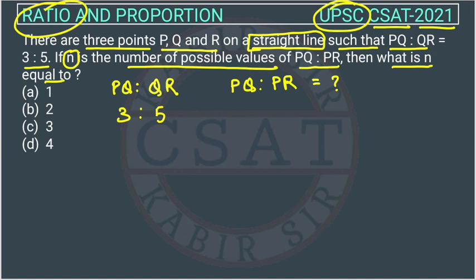You know I can assume one variable, suppose X. So PQ will be 3X and QR will be 5X. These points P, Q, R are on a straight line. Case 1: